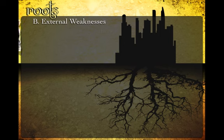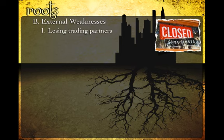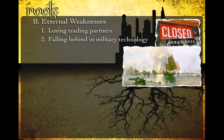You also have external weaknesses. Things like the loss of a trading partner — say they get conquered or you make them mad and they no longer want to trade with you — can have a major economic impact. Falling behind in military technology makes you very vulnerable. As shown here, the Chinese fell behind in technology while Europeans developed new naval technology, resulting in steam-powered steel ships going up against wooden wind-powered Chinese ships. It takes very little imagination to figure out who won and what impact that had on China.